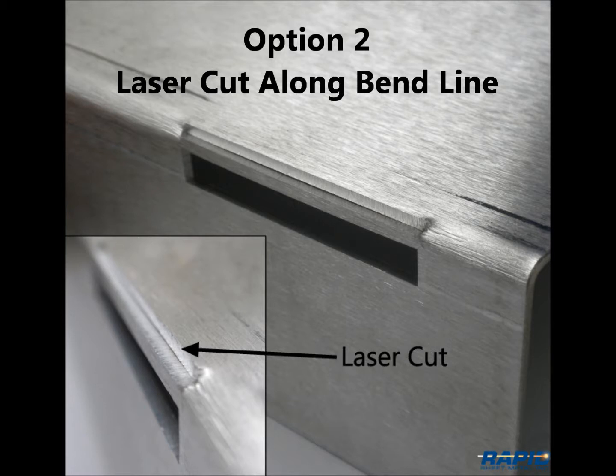Another option is to laser cut the metal on the bend line along the feature length. The cut is typically one beam diameter wide, which is approximately eight thousandths of an inch. This relieves the metal so that the feature flows and does not pull and distort. There is no additional cost to this option, but the result may not be aesthetically pleasing. Weld can be used to fill in the bend line cut, making it aesthetically pleasing.